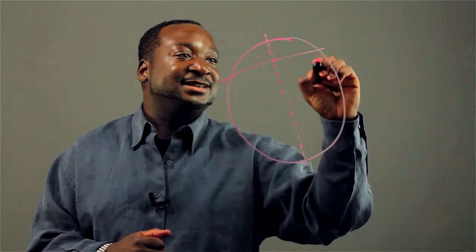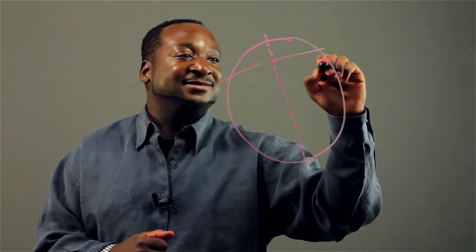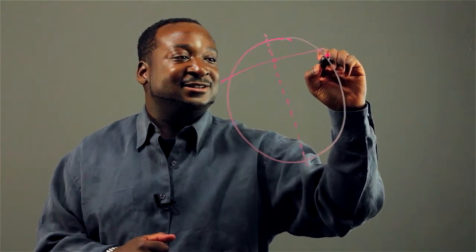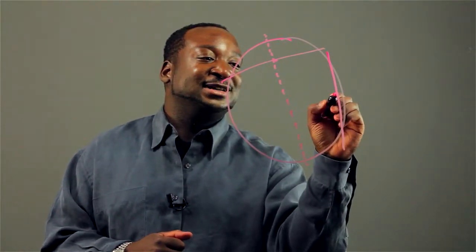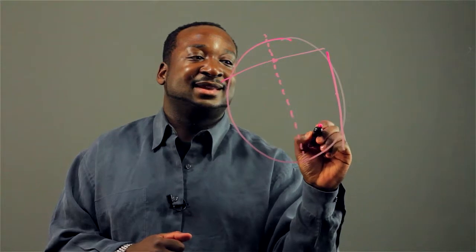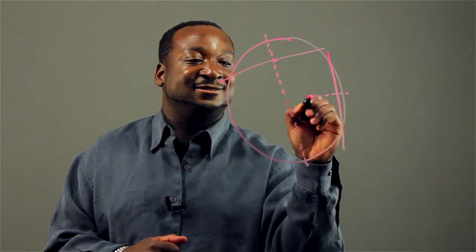And now I'm going to take another line and just pass it through this circle, go to its midpoint, and pass a perpendicular line through it.